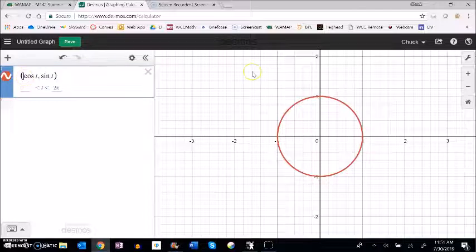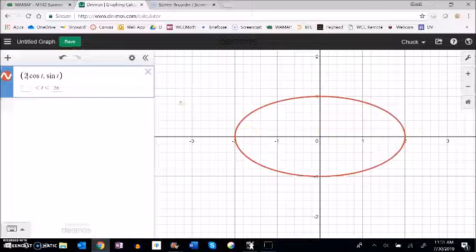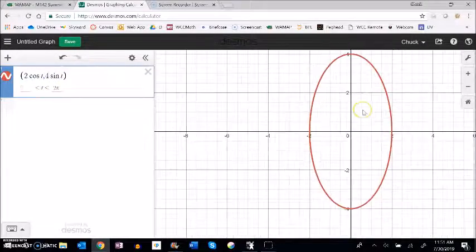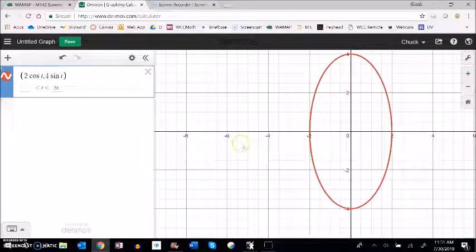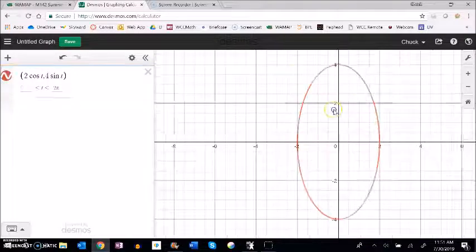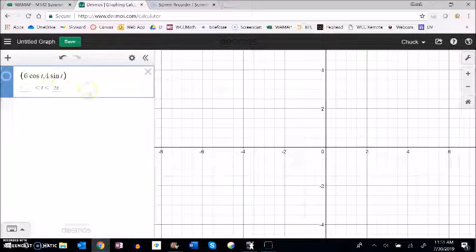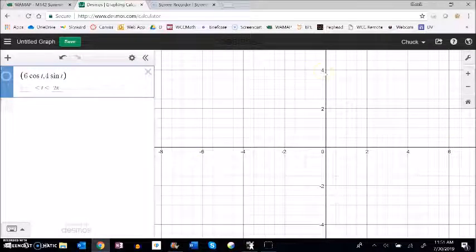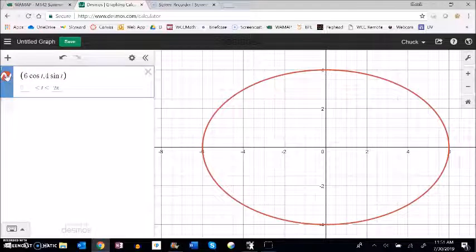Last time we messed around with, like, let's say this was 2. It stretches it out to 2 and -2 in the x direction. If this was 4, it stretches it out to 4 and -4 in the y direction. It gives us an ellipse. That's pretty straightforward. For example, if I change this to 6, you can imagine it will go from 6 to -6 in the x direction and from 4 to -4 in the y direction. It'll just look like that ellipse right there.